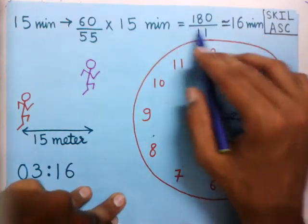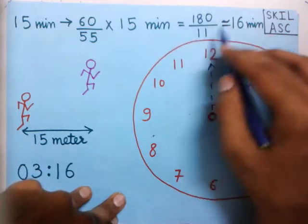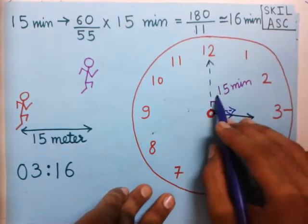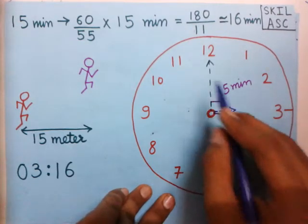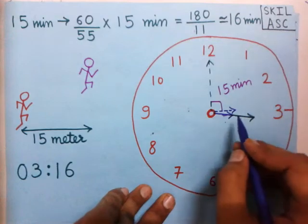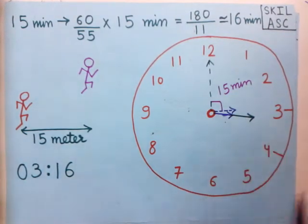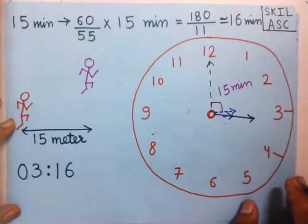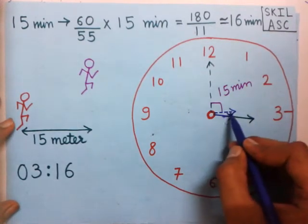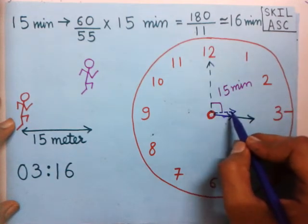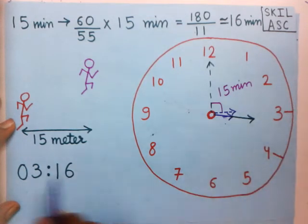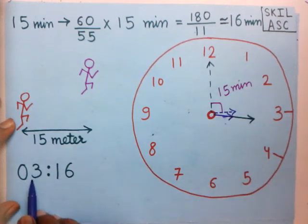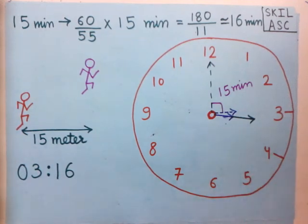For understanding we are using approximate values, but in an exam you must use exact values. After approximately 16 minutes, the minute hand will gain 15 minutes over the hour hand and these hands will be together. So after 16 minutes from 3 o'clock, the time is 3:16 — or 16 past 3 — at which the hands are together. I hope you have understood. Thanks for watching.